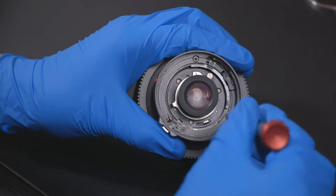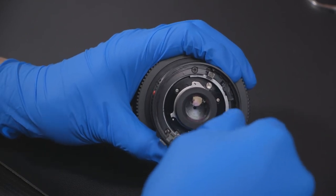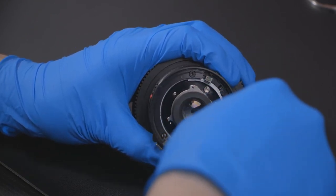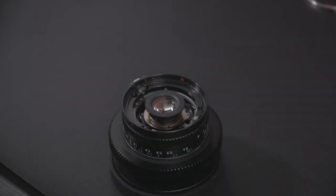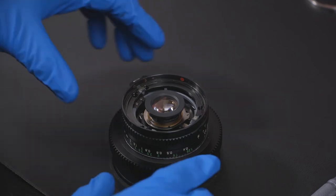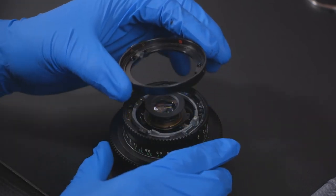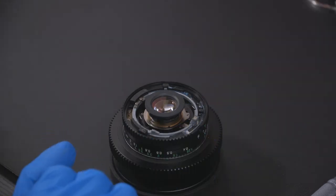Within the lens, we will be removing one silver screw and two black screws. Once the screws are removed, you will be able to lift away the lens release ring.